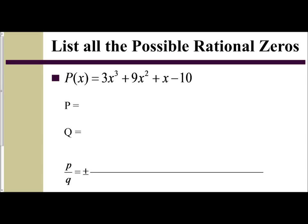In the following video, we are going to apply our rational zero theorem to make a list of all the possible rational zeros. So in this example, we have P of X equals 3X cubed plus 9X squared plus X minus 10.